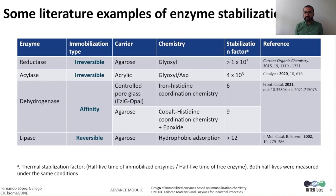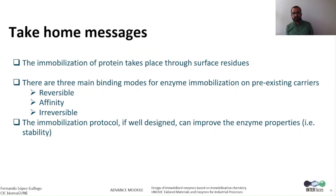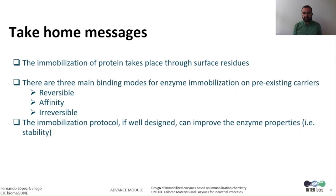Finally, in this table, I would like to illustrate the types of enzymes and carriers that can be thermally stabilized by immobilization. As we can see, irreversible immobilization through glyoxyl chemistry can achieve a stabilization factor of 1000, in comparison to the 10-fold stabilization factor achieved with reversible immobilization. The take-home messages of this unit are that immobilization takes place through different surface residues, there are three main types of immobilization — reversible, by affinity, and irreversible — and a well-designed immobilization protocol can improve enzyme properties such as stability and operational stability.